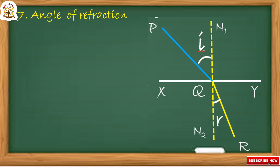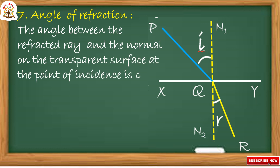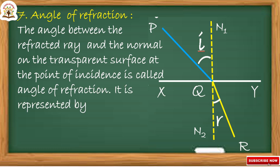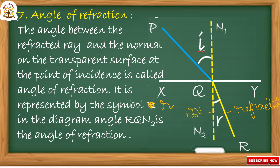The angle of refraction is the angle between the refracted ray and the normal on the transparent surface at the point of incidence. It is represented by the symbol r. R denotes the angle of refraction. In this figure, angle RQN2 is the angle of refraction.